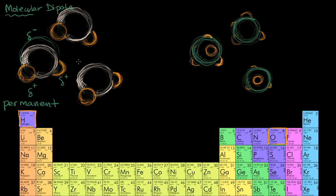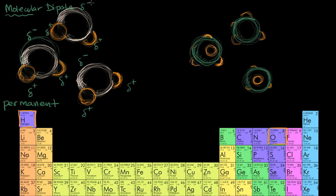This end of the molecule is going to be partially negative, and this end is going to be partially positive. This lowercase delta here is how we denote that partial charge. So one molecule is partially negative and partially positive, while another is partially positive and partially negative. Because of this permanent dipole of the water molecules, you can have attraction — the partially negative sides are attracted to the partially positive charges. These are the famous hydrogen bonds of water, H2O.